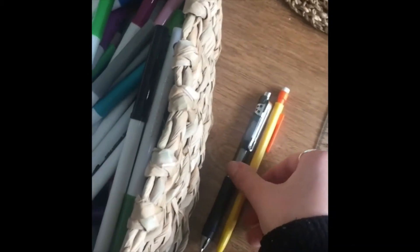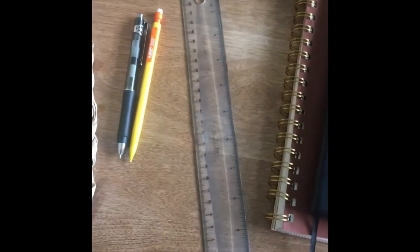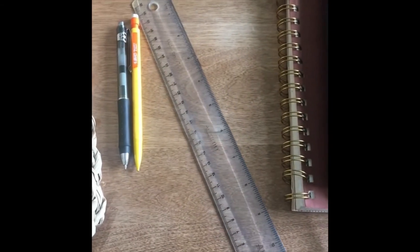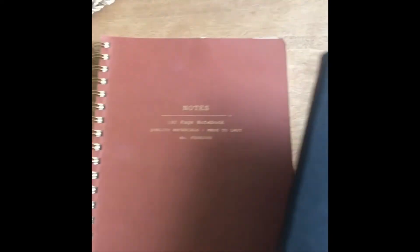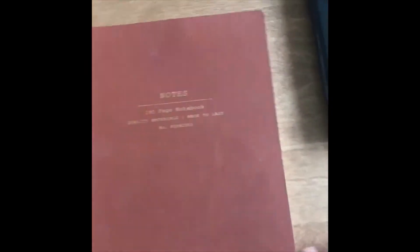And then finally your journal. I have a bullet journal, which is a journal that has a lot of small dots on the page. You can find these pretty cheap on Amazon, but they're also at Michael's and stores like Walmart and Target. If you don't use a bullet journal, you can also just use a regular lined notebook.